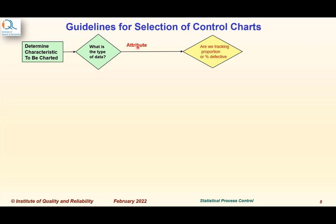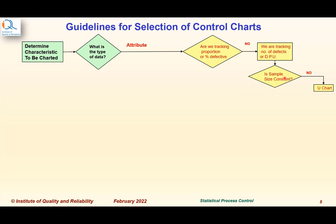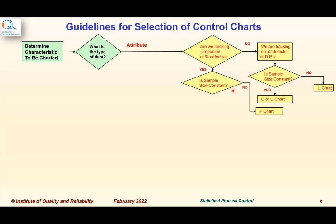Let us understand the guidelines for selection of control charts. First, determine the characteristic to be charted and identify the type of data. If it is attribute data, are we tracking proportion or percent defective? If not, we are tracking number of defects or defects per unit — in that case, if sample size is not constant we use a U chart; if constant, we use a C or U chart. If tracking proportion or percent defective, if sample size is not constant we use a P chart; if constant, we use an NP or P chart.